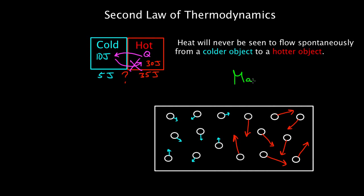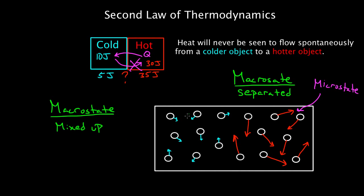So essentially what I'm saying is if you consider the macro state, where the hot molecules are separated from the cold molecules, there will be less microstates that satisfy that condition, then there will be microstates that satisfy the condition for a macrostate where the energy is mixed up, and you're just as likely to find a fast-moving particle on the left as you are on the right. This will have vastly more microstates. Many more possible ways of making up a mixed up state than there are microstates that create a separated state.